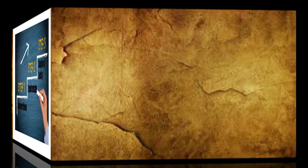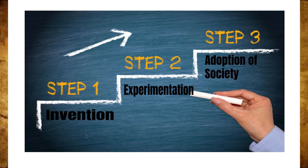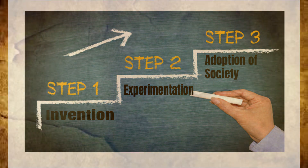Depending on the societal issues, technology goes through three stages: first, the invention and interpretative flexibility; second, experimentation, closure, and collapse of form; and third, wider adoption by society, which can solidify form, encourage alteration, and have intended effects.